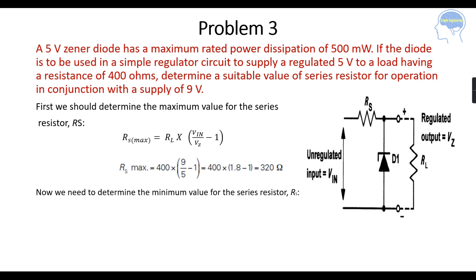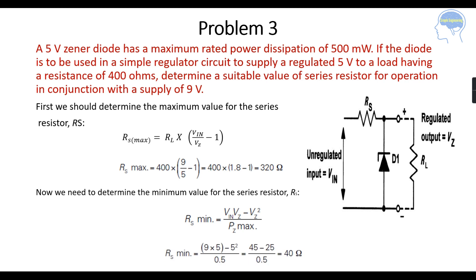Now we determine the minimum value for RS. The equation is: RS minimum equals (Vin minus Vz) divided by (Vz squared divided by Pz maximum). Vin is 9, Vz is 5, and Pz maximum is 0.5 watts (500 milliwatts). Substituting these values gives RS minimum equal to 40 ohms. So a suitable value of RS would be between 40 ohms (minimum) and 320 ohms (maximum), so you can take a value in the middle, such as 100 to 150 ohms.